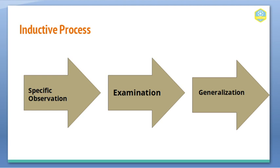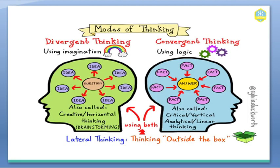Now we'll move to another part of this lesson: modes of thinking. There is actually one mode of thinking called lateral thinking, which has been divided into two parts — using logic and using imagination. Logic gives you the closest factual answer, while imagination gives you multiple answers with multiple creative solutions. This relates to divergent thinking and convergent thinking.